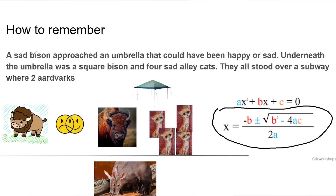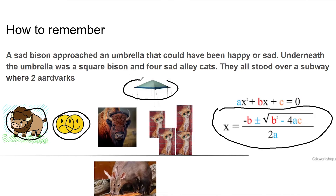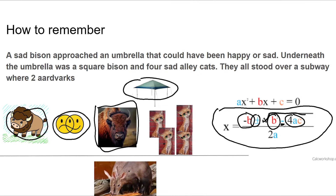My brain works better by envisioning pictures. So you've got a sad bison approaching an umbrella that could be happy or sad — so there's my happy-or-sad and my umbrella. Underneath the umbrella was a square bison, and four sad alley cats. They all stood over a subway where there were two aardvarks. The letters in the equation match up with those words: sad bison is negative b, under the umbrella, square bison minus four alley cats — alley cats are sad — over two aardvarks.